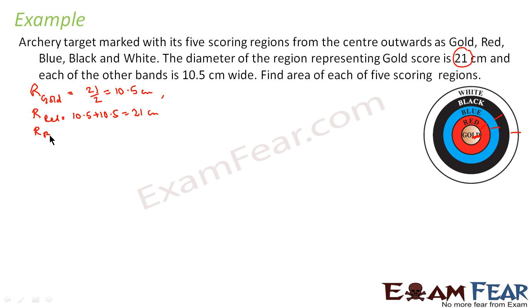Similarly, radius of blue, this will be the radius of red plus 10.5 because this is 10.5, everything is 10.5. All the extra regions is 10.5 cm. So blue will be 21 plus 10.5 that is 31.5 cm. So I have radius of blue.